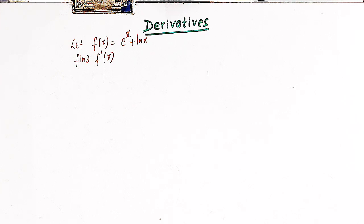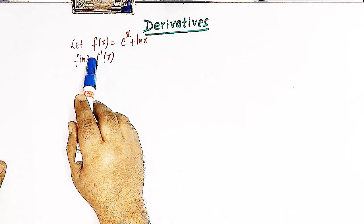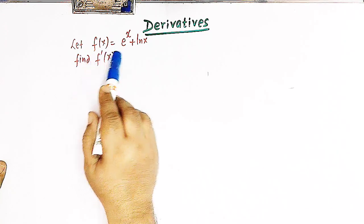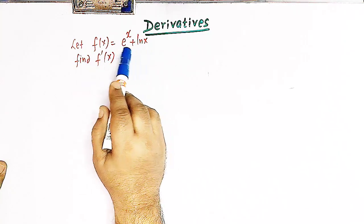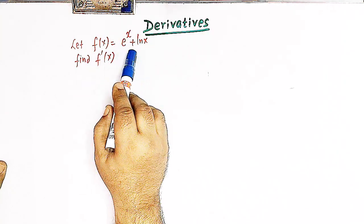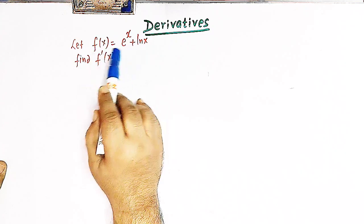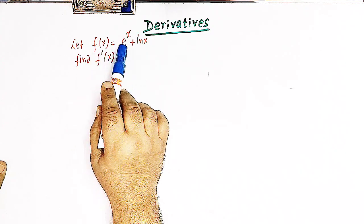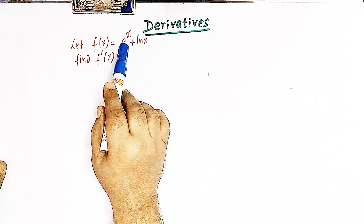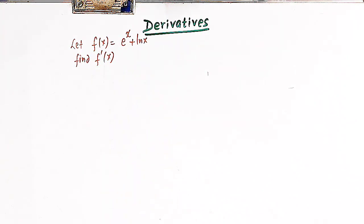The first principle is also known as finding out the derivative using the limit definition of derivatives. Here we have a function f of x which is the sum of the exponential function and the logarithmic function, and we have to find out the derivative of this function using the first principle.